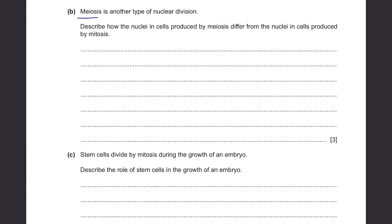Part B. Meiosis is another type of nuclear division. Describe how the nuclei in cells produced by meiosis differ from those produced by mitosis. For meiosis, the cells produced are genetically different from each other and from the parent cells — unlike mitosis where cells are identical to the parent. Also, meiosis produces haploid nuclei compared to the diploid nuclei produced by mitosis, because the chromosome numbers are halved during reduction division.